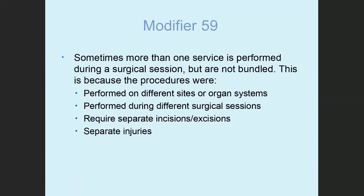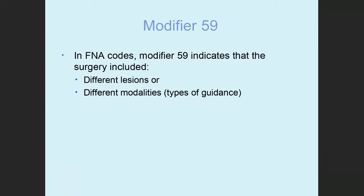Sometimes services that seem related are, in a specific case, not related. This may be because they're performed on different sites or organ systems, performed during different surgical sessions, require separate incisions or excisions, or they're for treatment of separate injuries. Modifier 59 is used in fine needle aspiration biopsies to indicate the procedures are performed on different lesions or use different modalities — meaning types of guidance. We'll talk about this more as we review the guidelines.